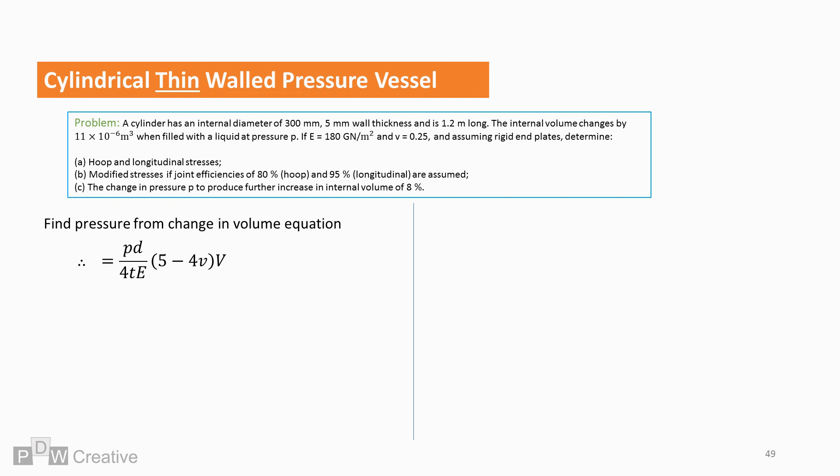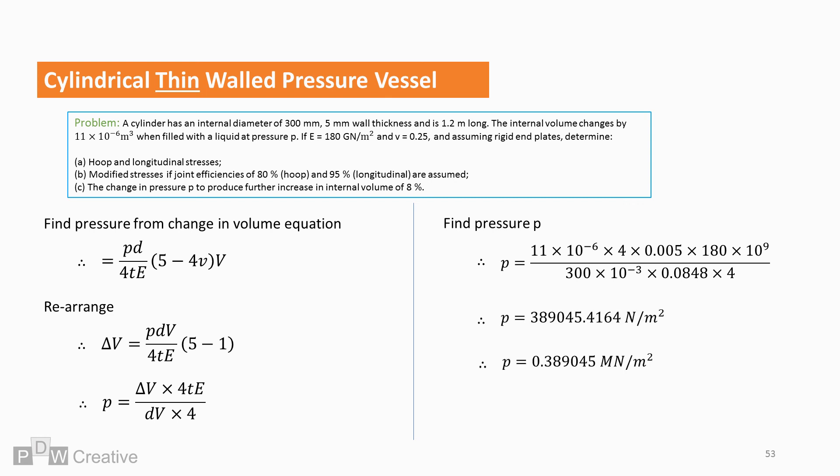So let's take the change in volume equation. Little v, or Poisson's ratio, is 0.25. So we can reduce 4 to 1. We could also bring volume into the fraction. We can then further rearrange to find P. So now, let's populate the equation. And from this, we can calculate the pressure, P, is 0.389 meganeutons per metre squared.